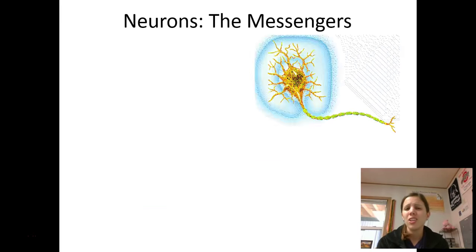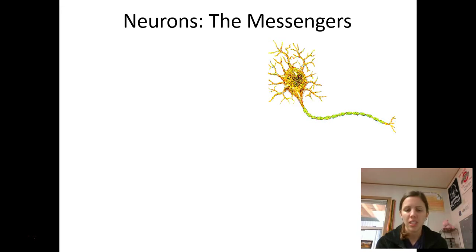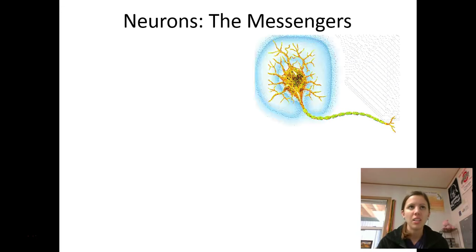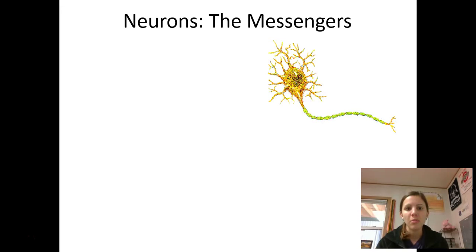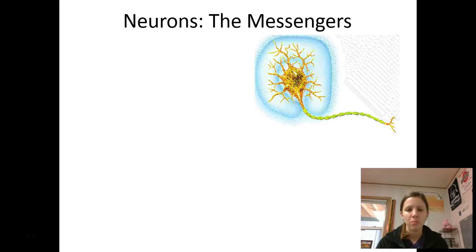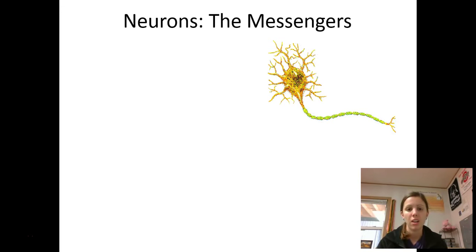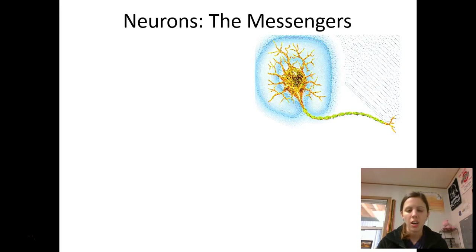So what is a neuron? A neuron is a specific type of nerve cell that really is the basic building block of your brain. It forms all of your memories and stores any type of information that we need to process language, emotion — basically all of our biological processes revolve around a neuron.